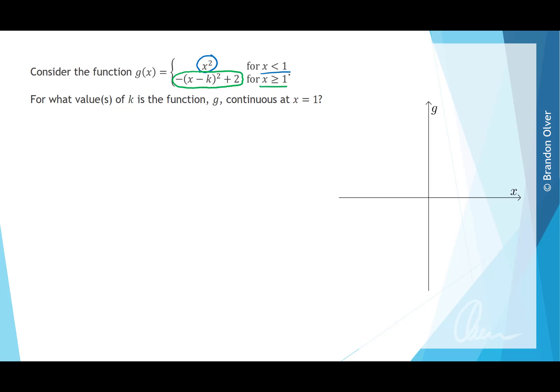To be continuous we need the limits as we approach 1 from the left and the right hand sides to equal 1, and we need that to be equal to the function evaluated at 1.